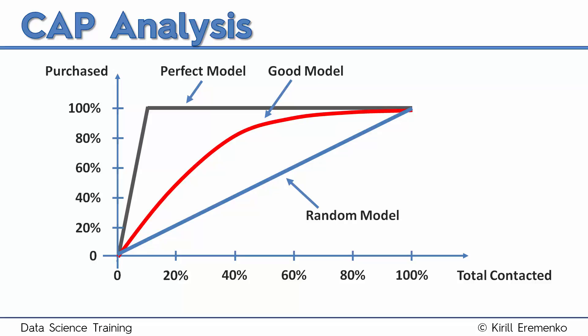As we've discussed, there are three lines that are important on the CAP curve. The blue line which is the random line when you select your samples at random. The red line which is our model line, and different models will have different red lines.